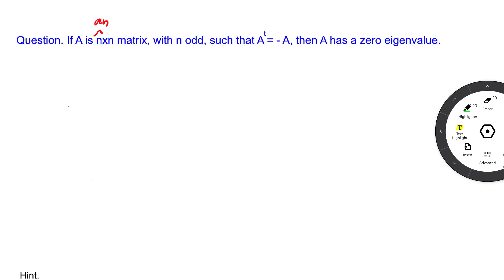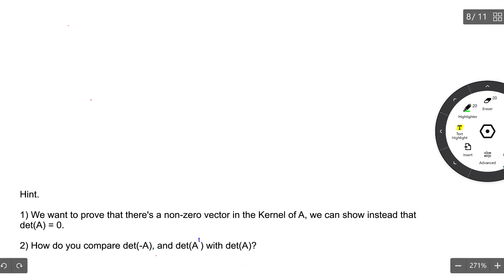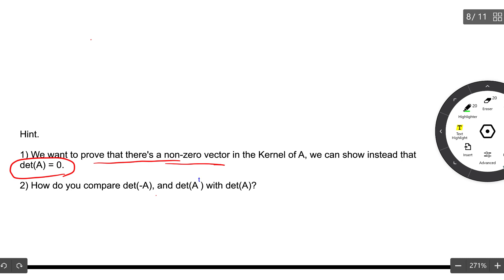We have an n by n matrix and n is odd. A transpose equals negative A. We want to prove that A has a zero eigenvalue. You can just try to solve it for yourself. We want to prove that there is a non-zero eigenvector in the kernel. And if we have a non-zero element in the kernel, then the determinant must be zero. And the second step is just to compare determinant of minus A and determinant of A transpose with determinant of A, and use the fact that (-1)ⁿ is actually minus 1 when n is odd.